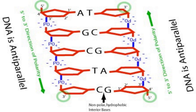Although the two strands of a DNA molecule are complementary, they are not in the same 5' to 3' orientation. In fact, the two strands are said to be anti-parallel to each other, with the 5' end of one strand corresponding to the 3' end of the complementary strand and vice versa.